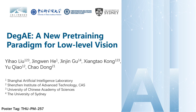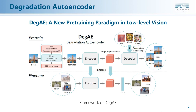I am Yihao Liu. It is a pleasure to share our CVPR highlight paper, DAGE: a new pre-training paradigm for low-level vision. Recently, self-supervised pre-training has achieved remarkable success in high-level vision, but its application in low-level vision remains ambiguous and not well established. We aim to answer essential questions about pre-training and establish a new pre-training scheme for low-level vision. We propose a new pre-training paradigm called Degradation AutoEncoder (DAGE), which follows the philosophy of designing pre-training data to learn a general low-level vision representation that can improve the performance of various tasks.